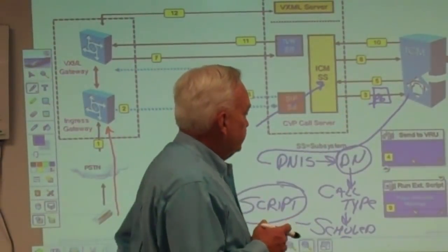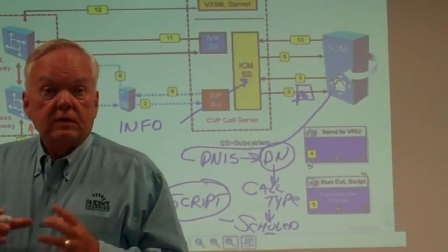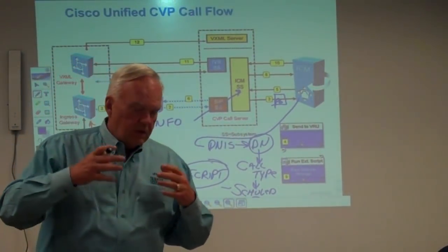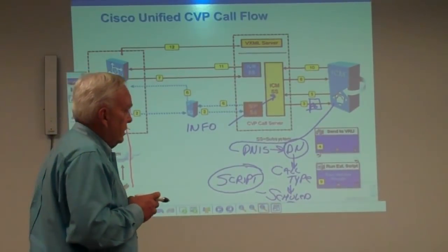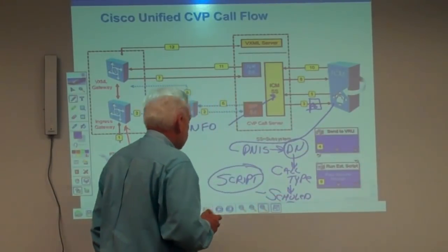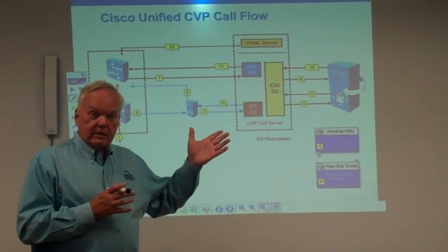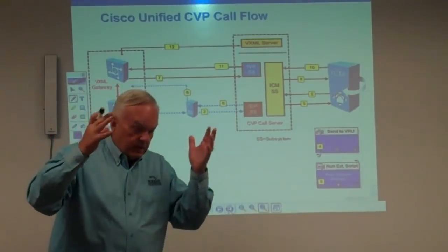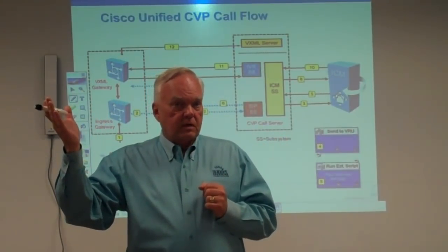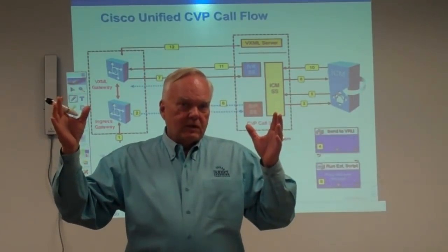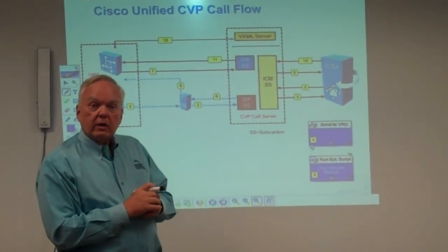The route request comes through, hits the script, and runs through several nodes to set the environment: setting the language, the media location, and the media library — setting this call up so I can ultimately talk to the caller. Ultimately I'll come down to a node called Send to VRU. The Send to VRU could have been called Connect to VRU, because at this point ICM says it would like to talk to the caller, but it can't touch the call directly. So it sends instructions to a VRU and asks that VRU to talk to the caller, ask questions, and get back with what happened.